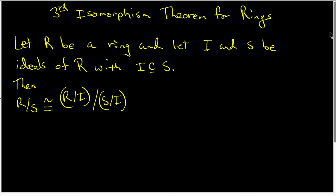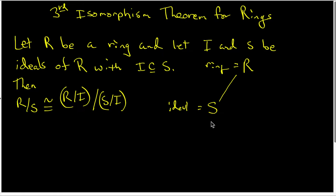In order to really understand what the third isomorphism theorem is saying, we need to go back to realizing that this is one of the cases that the correspondence theorem deals with. In particular, what we've got is a ring R, and we have an ideal S inside of R, and we have S containing an ideal named I. And this is one side of the correspondence theorem.